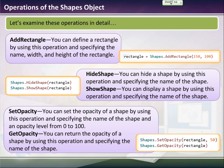You can set the opacity. You can specify the opacity of the shape by labeling it from 0 to 100. Now 100 means it's opaque. 0 means you can see right through it. Get opacity. You can return the opacity of the shape by using the operation specifying the name of the shape.